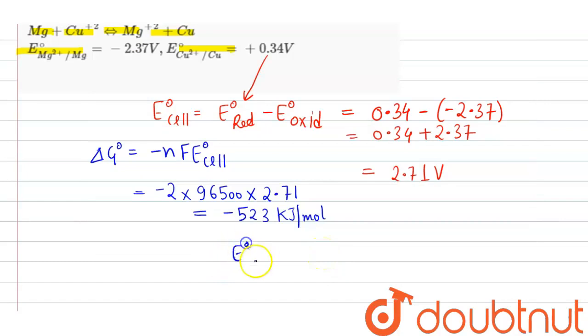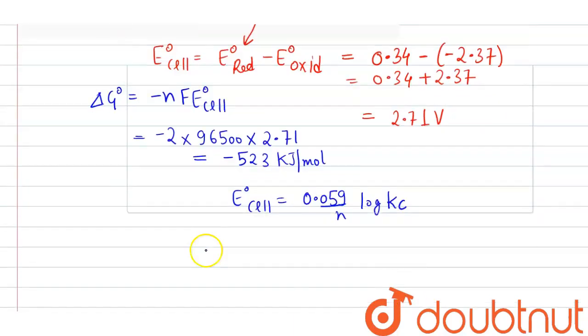And the E⁰ cell is also related to equilibrium constant by the formula: E⁰ = 0.059/n log Kc. So here we have to take log values. Putting the value of E⁰ cell...